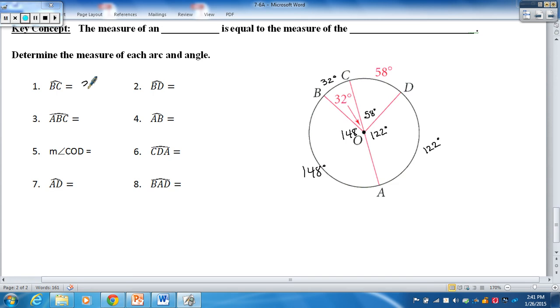So BC, 32 degrees. BD, well, I'm going to take BC plus CD. So we have 90 degrees there. And I can even go ahead and show that 90 degree symbol there. ABC. Now that's either a semicircle or a major arc. So ABC, that is a semicircle. Well, that's simple. 180 degrees. I should also be able to take 148 plus 32. And that does equal 180. So either way there.